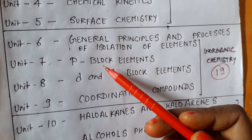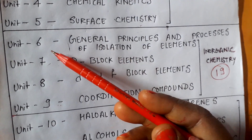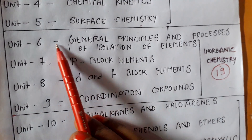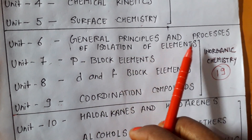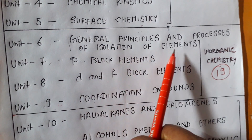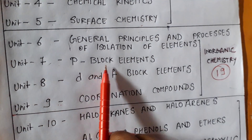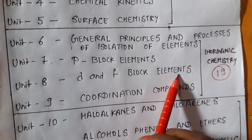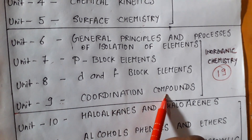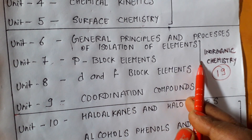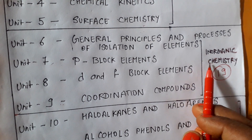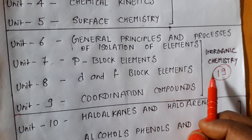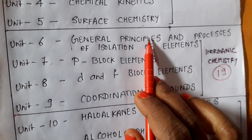In inorganic chemistry, we have to study 4 units: unit 6 is general principles and processes of isolation of elements, unit 7 is P block elements, unit 8 is D and F block elements, and unit 9 is coordination compounds. In the final examination, a total of 19 marks are asked from these four units.